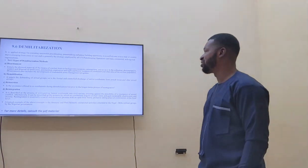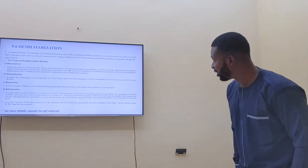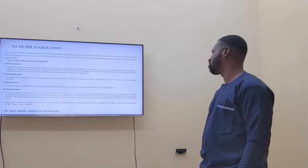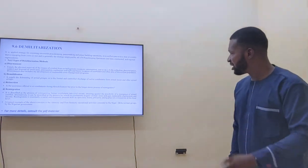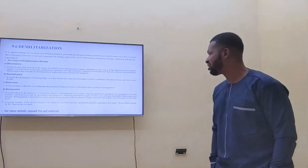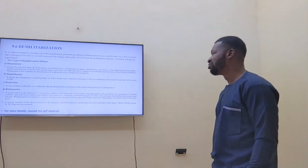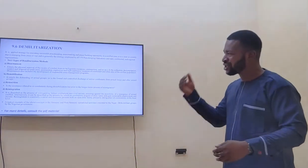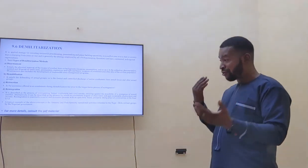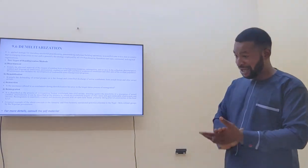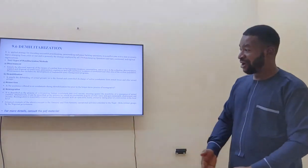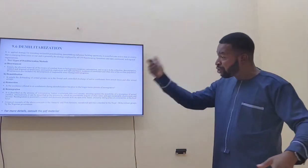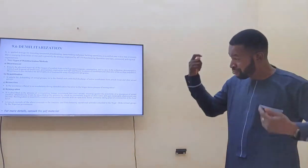Demilitarization is an applied strategy for executing successful peacekeeping and peace-driven operations in a conflict zone — in a state emerging from a crisis of war. It is a strategy employed in peacekeeping operations by states, continental bodies, and regional organizations. The demilitarization method includes cantonment — bringing all combatants off the field — and demobilization, which involves disbanding armed groups. In Nigeria, for example, we have groups like the Boko Haram, herdsmen, and IPOB. When you demobilize them, you strip away the resources giving them strength.